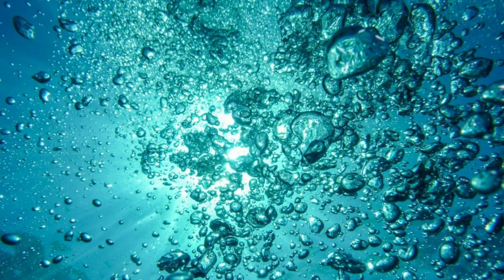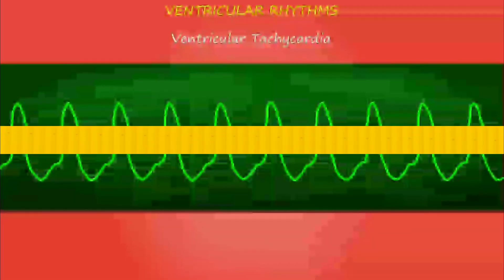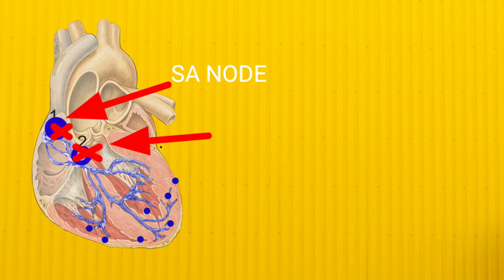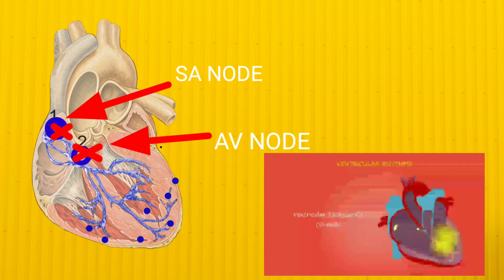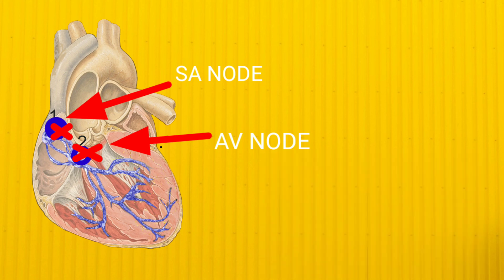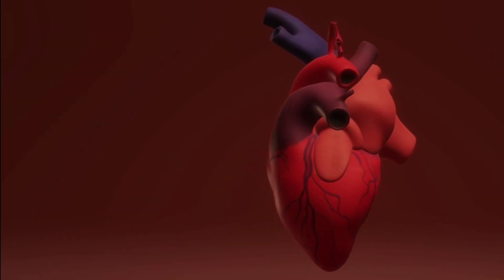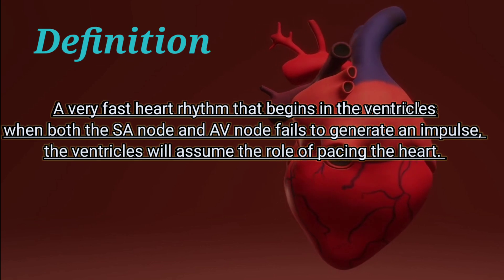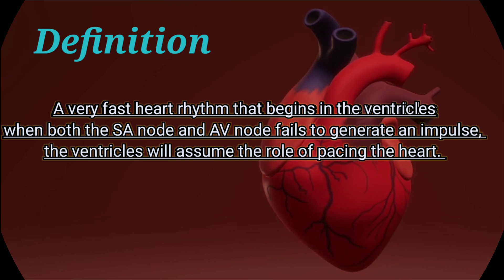Let's move on to the video — Ventricular Tachycardia. Have you seen this faster rhythm? This is VTAC. As you know, the heart has one main pacemaker and a backup pacemaker. In this case, the main pacemaker SA node and the backup pacemaker AV node have lost control, so the ventricle will assume the role of pacing the heart. But it is not effective enough to pump blood out, so there is no cardiac output. As a result, there is no oxygen and the patient will die soon. A very fast heart rhythm that begins in the ventricles — when both the SA node and the AV node fail to generate an impulse, the ventricles assume the role of pacing the heart.